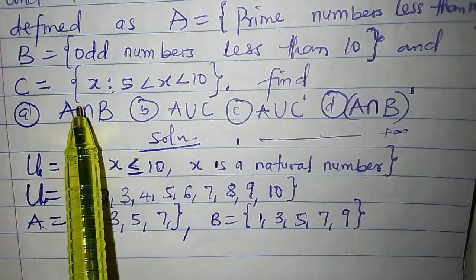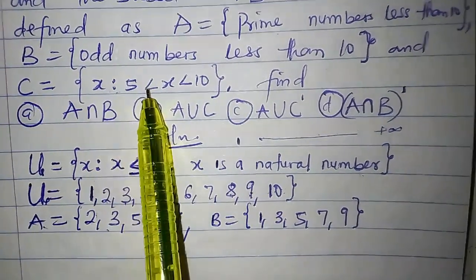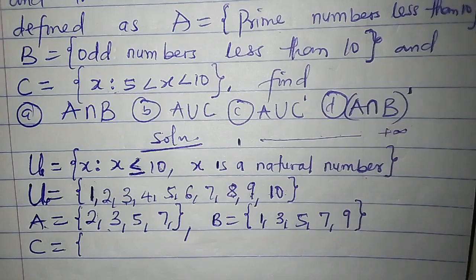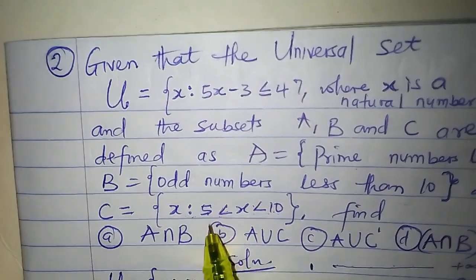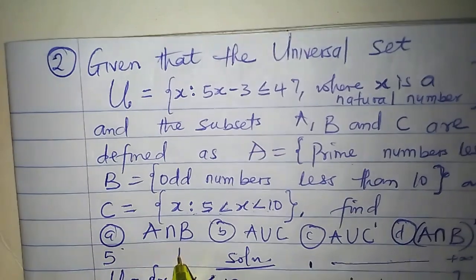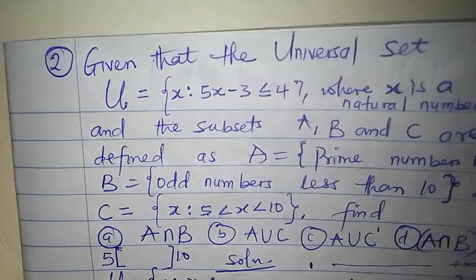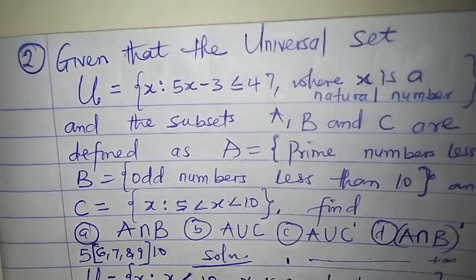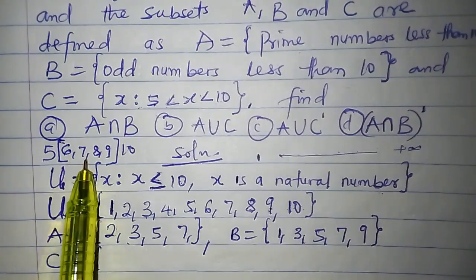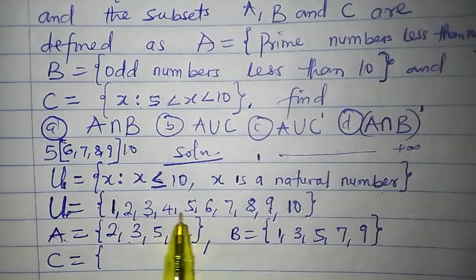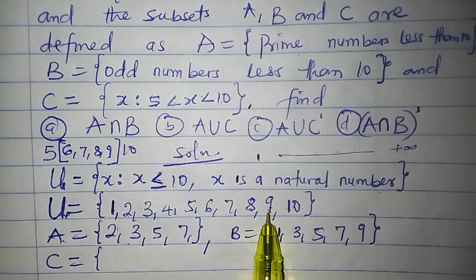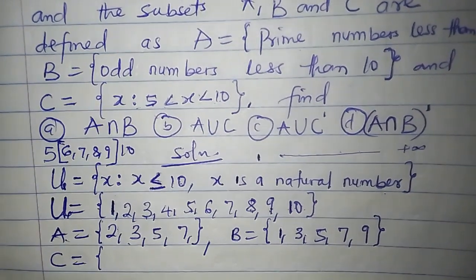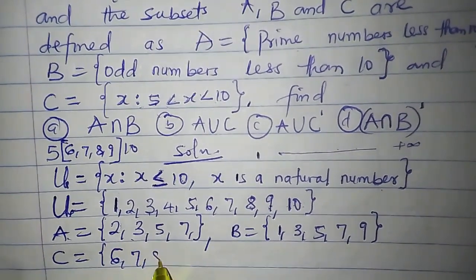Set C is the set of numbers X such that 5 is less than X and X is less than 10. The numbers are strictly between 5 and 10 — 5 and 10 are not included. So numbers between 5 and 10 from our universal set are 6, 7, 8, and 9. Set C is {6, 7, 8, 9}.